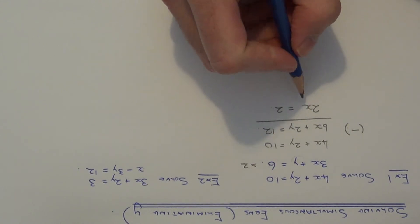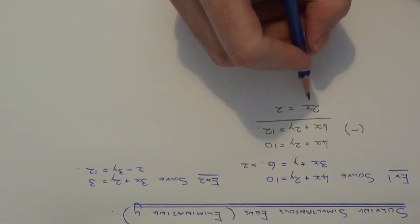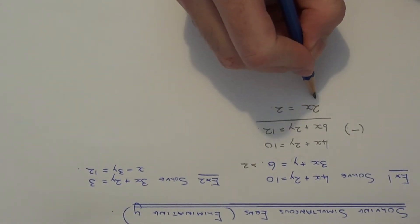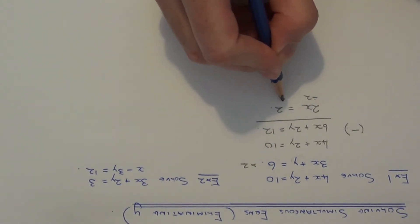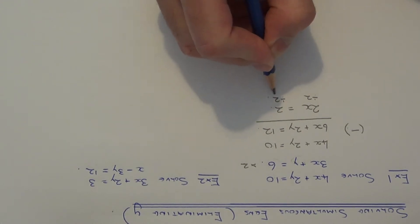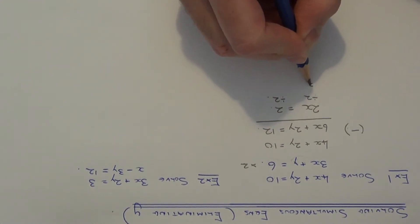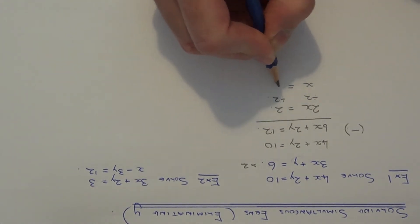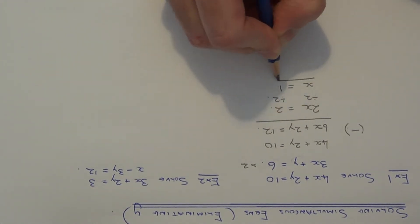The final step is to solve this equation. If we divide both sides by 2, you'll get an answer of x equals 1.